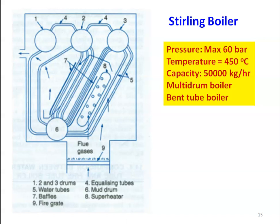We have baffle plates — number seven. Number eight is the superheater; we have a bundle of superheater tubes. Number nine is the fire grate, where the burning of the fuel takes place. Number four is the equalizing tubes — equalizing tubes means that in all three drums we have to maintain the same level of water and steam, so we connect the three drums to equalize the levels. One advantage of the bent tube is that because of heating, the tube material will expand, and because of the bend, the expansion will be accommodated easily, so overall structural problems will not occur in the Stirling boiler.